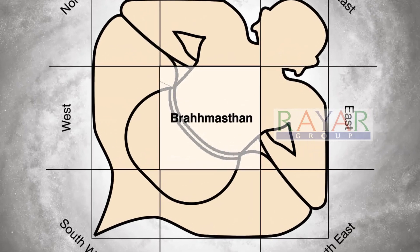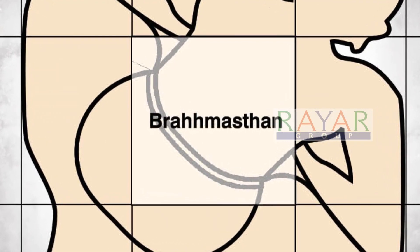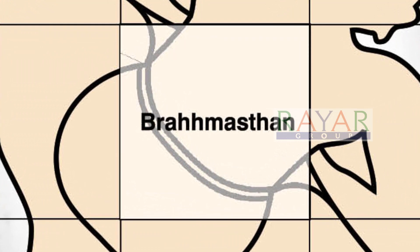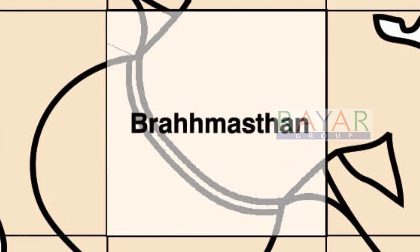Welcome back to my channel. In this video we are going to talk about Brahmastan. What is Brahmastan? When you divide your property into nine equal parts, the area which falls between the four cardinal directions — north, east, south, and west — that central area is called Brahmastan. More precisely, the center point of your property is the Brahmastan.